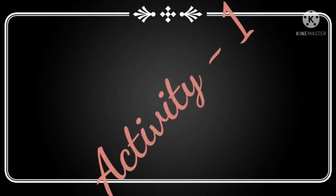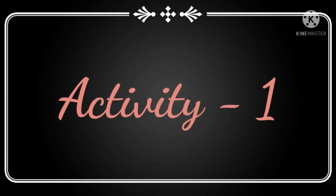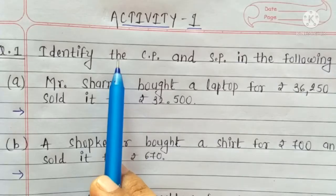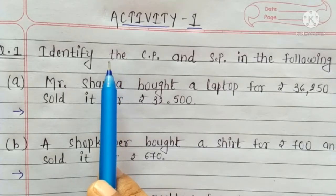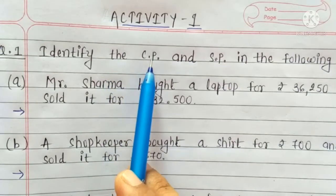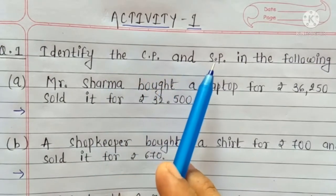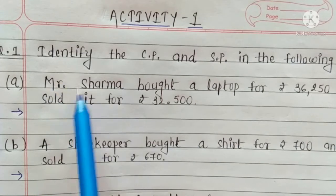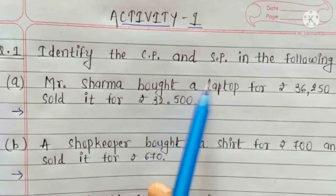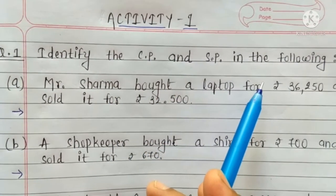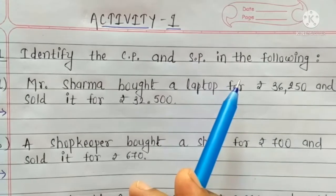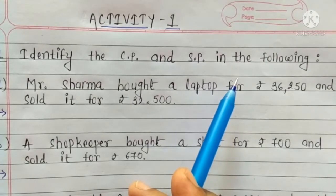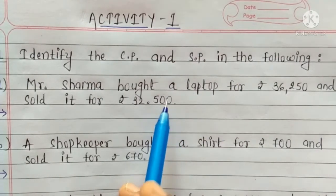Now we are going to solve Activity 1, which is based on profit and loss. Question number 1: Identify the cost price and selling price in the following. A. Mr. Sarma bought a laptop for Rs. 36,250 and sold it for Rs. 32,500.